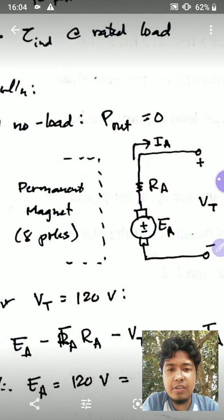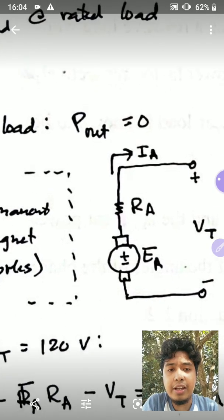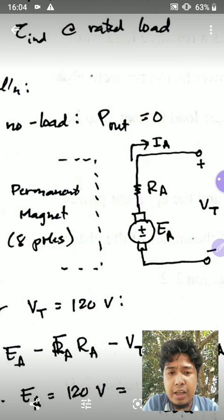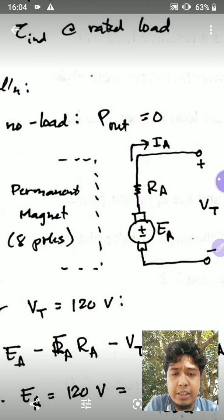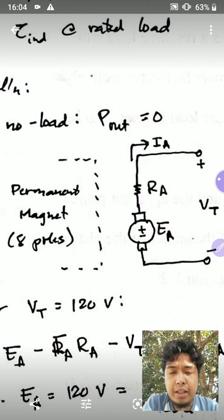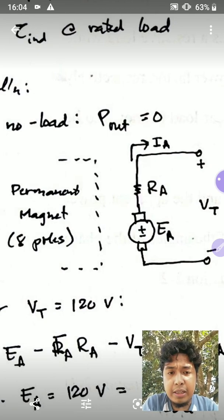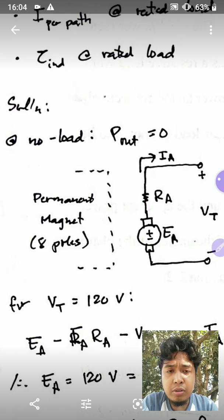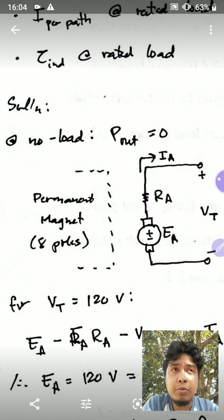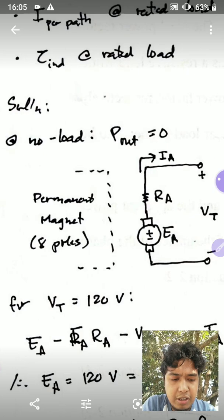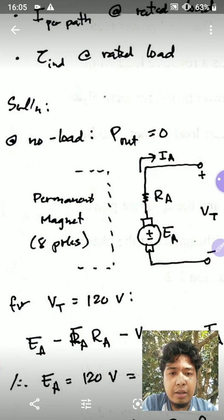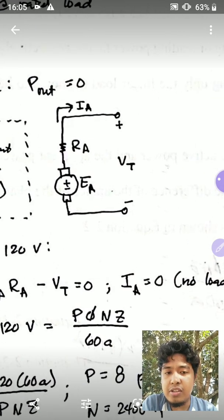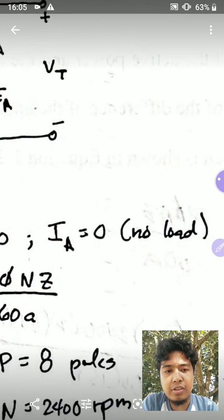This is the schematic for this example. This is a permanent magnet DC machine having 8 poles, so you have the magnetic field from the permanent magnet setup and then you have the armature. At no load, that just tells you that the output power is zero, but it doesn't mean the voltage is zero. What it means is that the load current — which is essentially the armature current — is zero. That is no load.